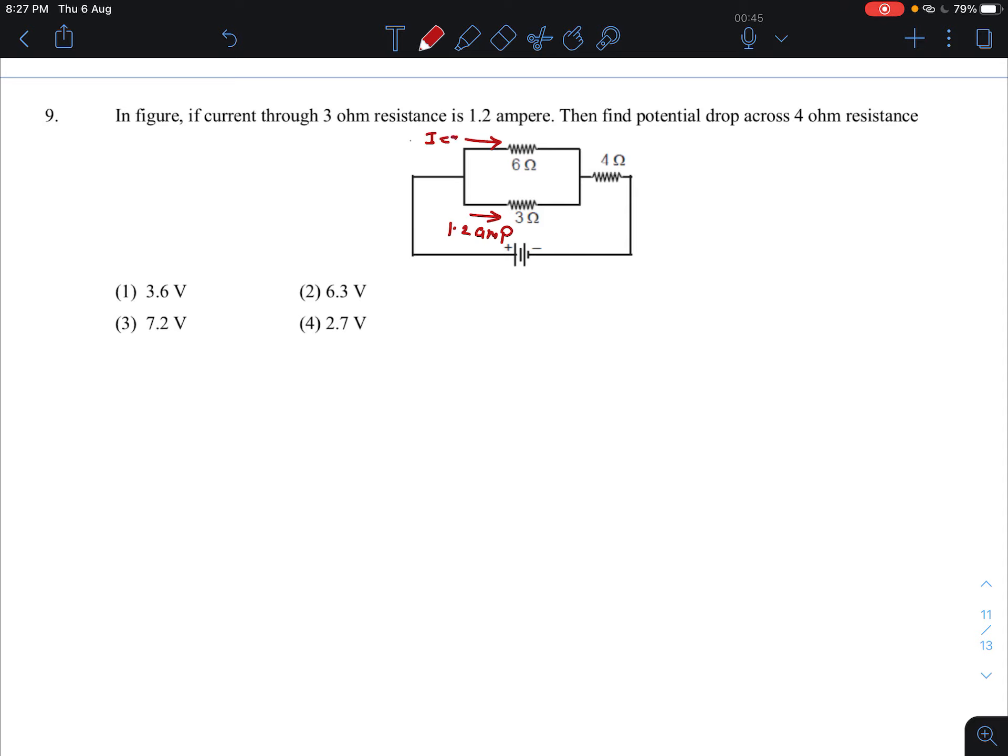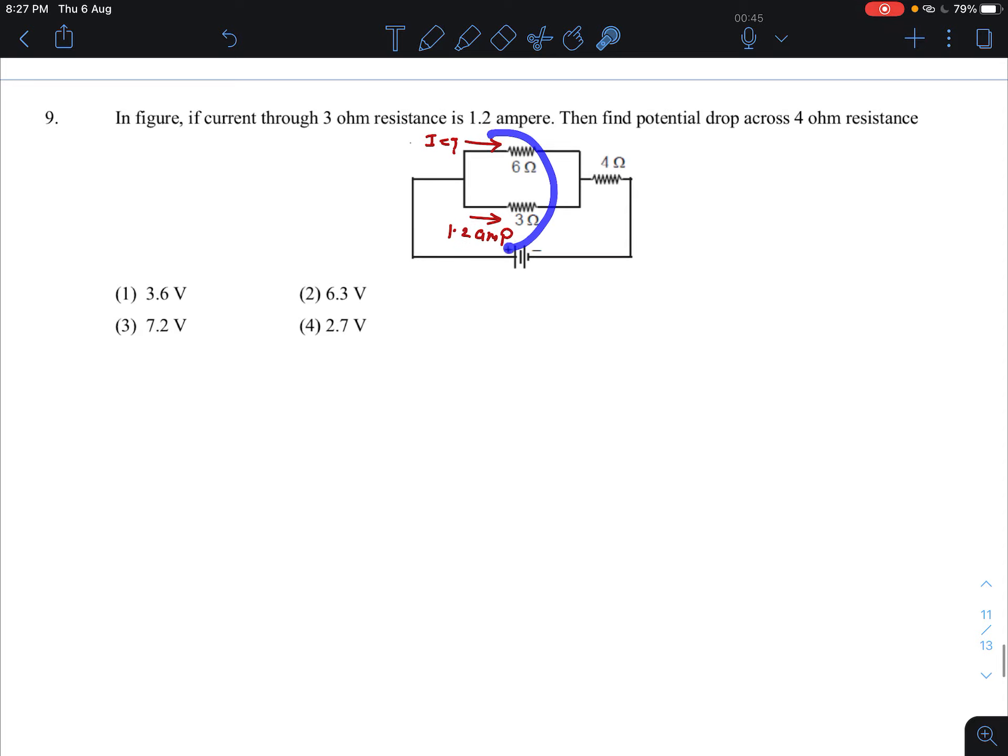So we can calculate how much current is here. If we get the current here, then we get the total current from this branch. The total branch will get the total current.